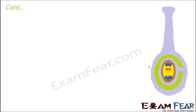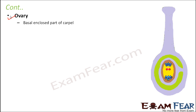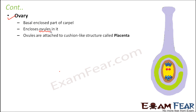Let us now quickly look at the description of the different parts of the carpel. The first part is the ovary — it is the basal, enclosed part of the carpel. The basal portion is swollen and covered from all ends. It encloses ovules within it, and ovules play a very important role in the process of sexual reproduction. We will talk about ovules a little later.